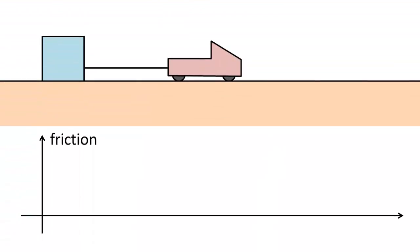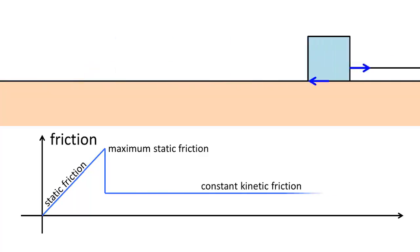If we increase the pulling force slowly, friction will also increase to match the pulling force. But there is a limit to how strongly the two surfaces can cling onto each other. Once the block starts sliding, friction drops to a constant value.